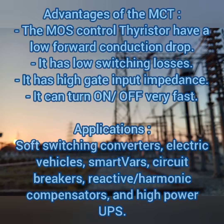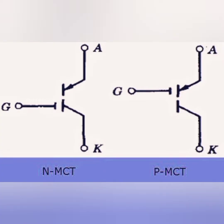The MCT has several advantages: low forward conduction drop, low switching losses, high gate input impedance, and it can be turned on or off faster than SCR with higher switching abilities. Applications include soft switching control converters, electric vehicles, circuit breakers, reactive harmonic compensators, and high power UPS. This is the symbol of the MCT — it has both N-type and P-type MCT variants shown.